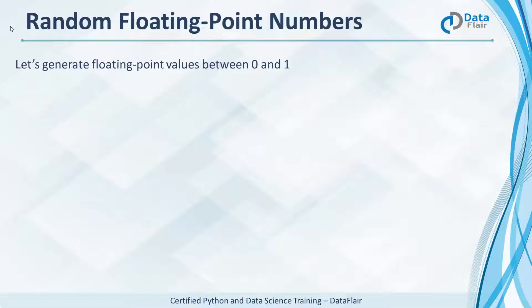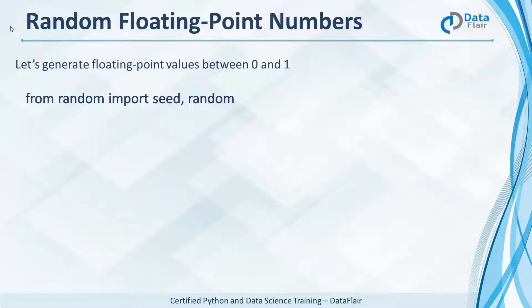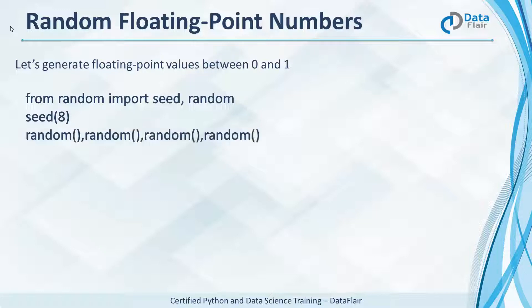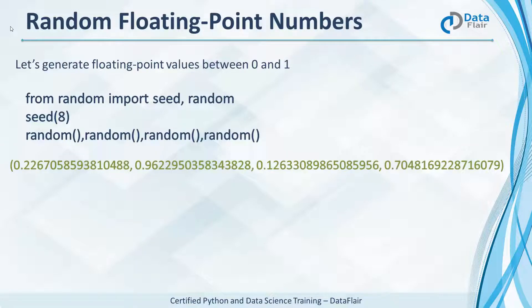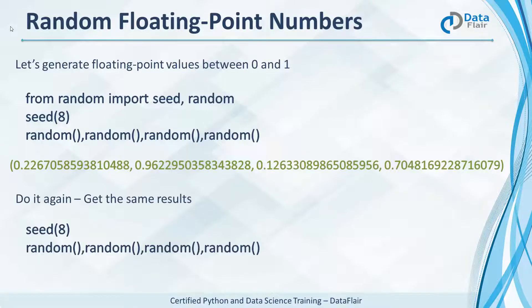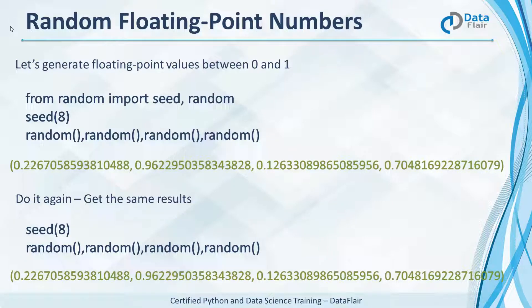Let's generate a random floating number first — this will give us values between 0 and 1. Let's make the imports and seed the algorithm with the value 8, then generate 4 random numbers. This gives us 4 random numbers from 0 to 1. If we do this again, you'll see that it gives us the same results, so there indeed must be a pattern.